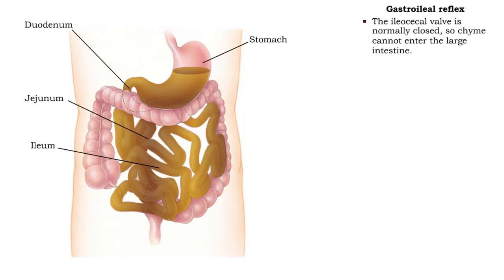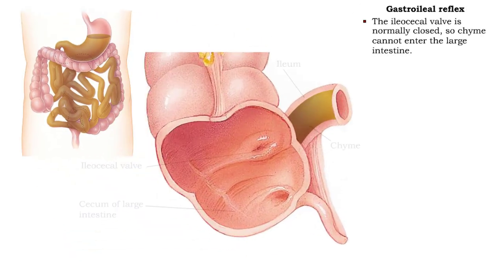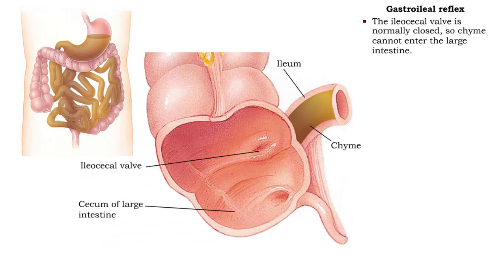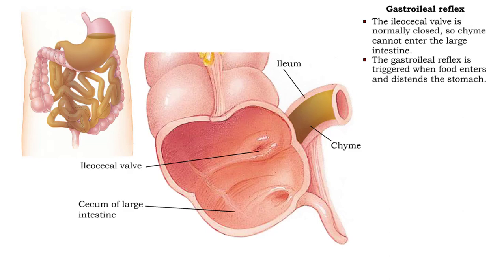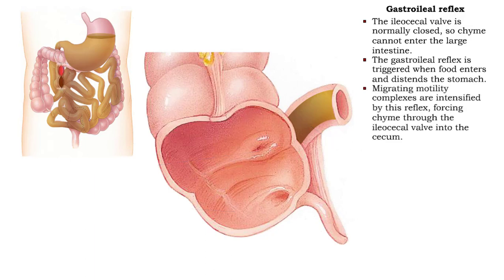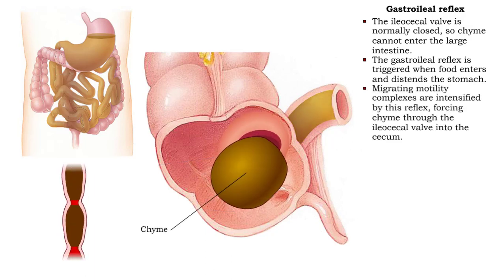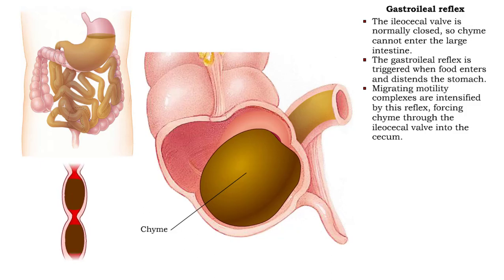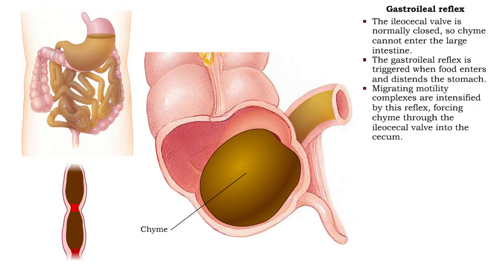Normally the ileocecal valve is closed, so chyme cannot enter the large intestine. However, when food enters and distends the stomach, stretch receptors trigger the gastroileal reflex. The gastroileal reflex intensifies migrating motility complexes. These muscular movements force chyme through the ileocecal valve into the cecum of the large intestine.